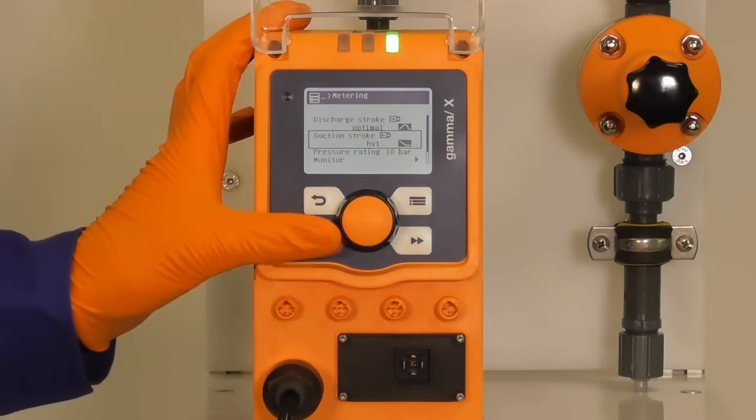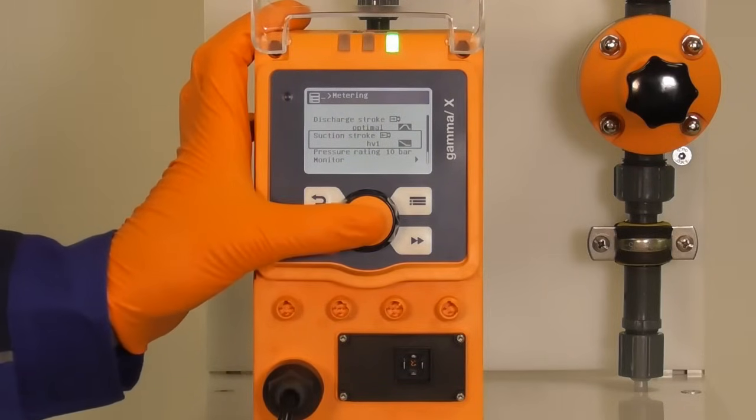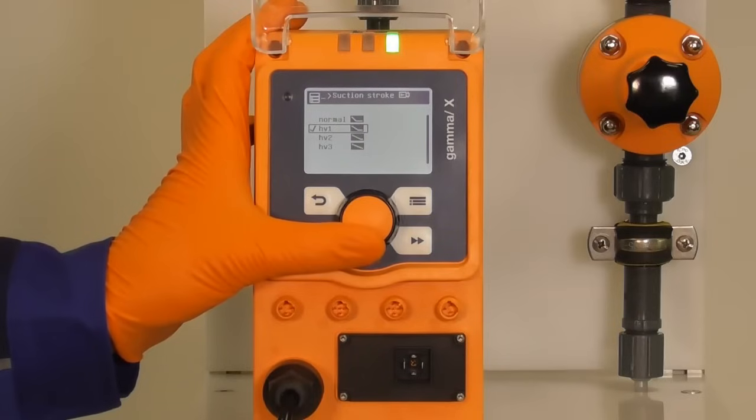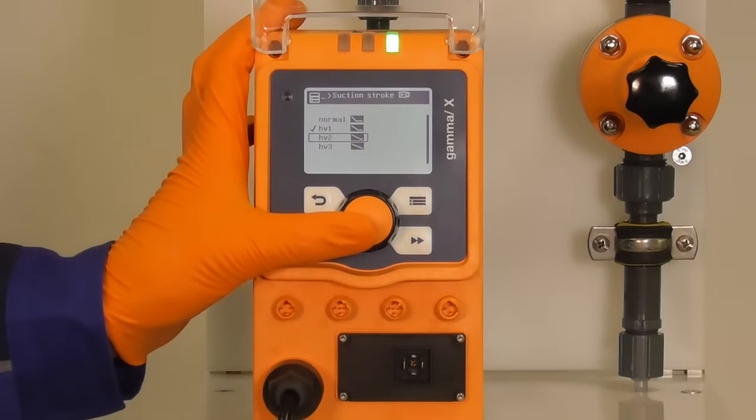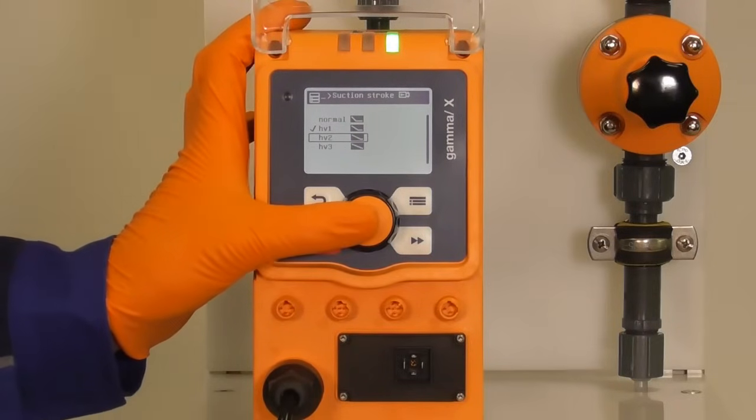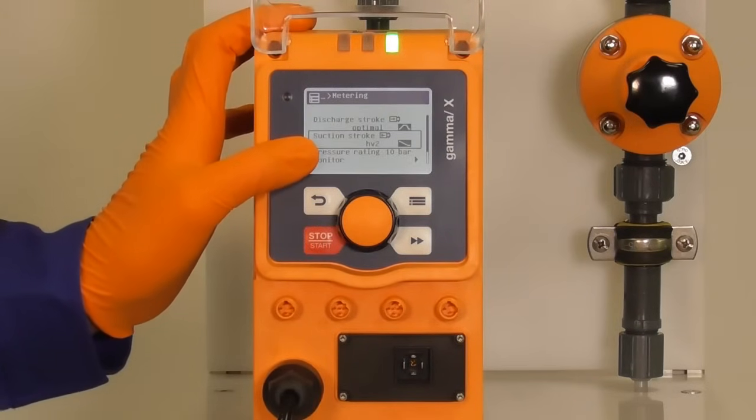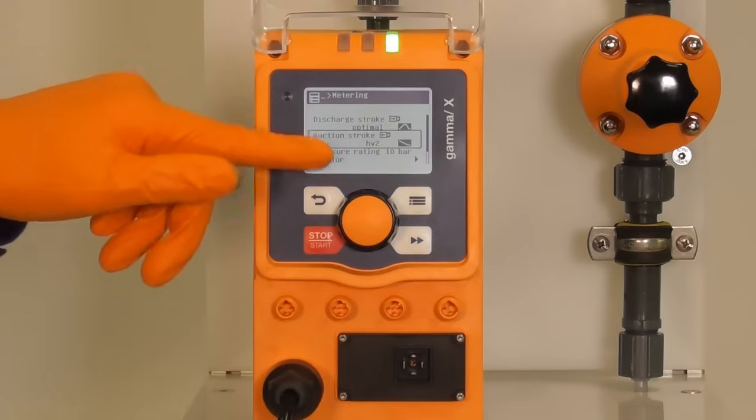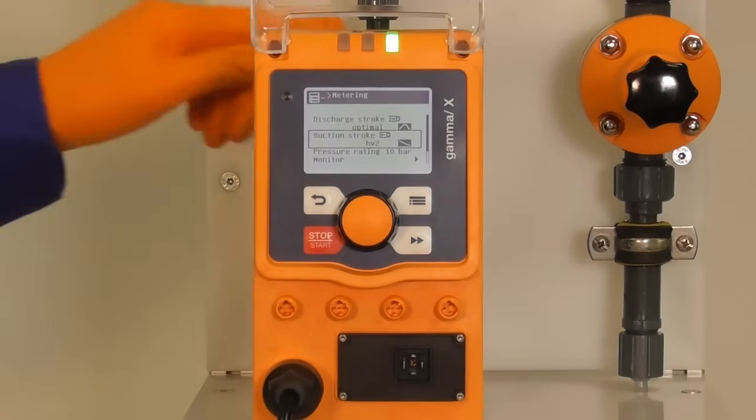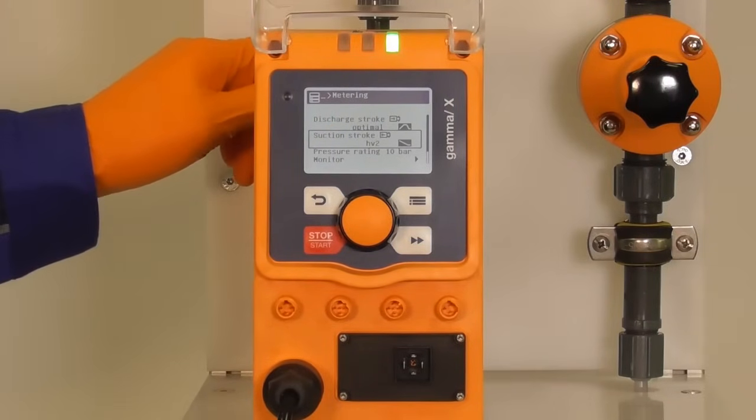When the viscosity is even higher, when it is between 500 and 1000 mPa, I recommend to use high viscosity 2. And then you select high viscosity 2 in addition with springs in the wharf.